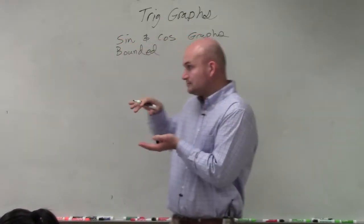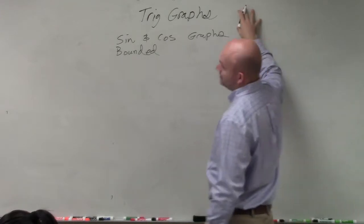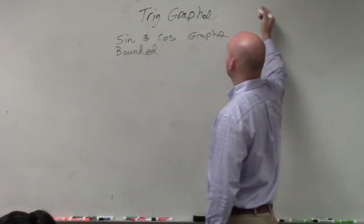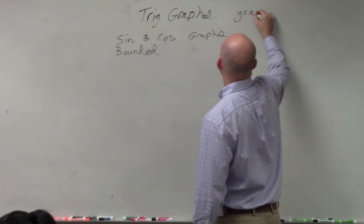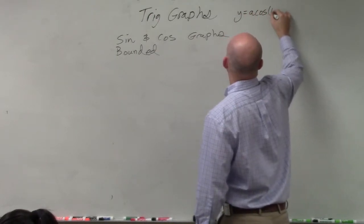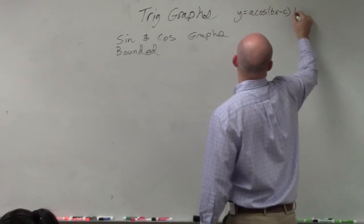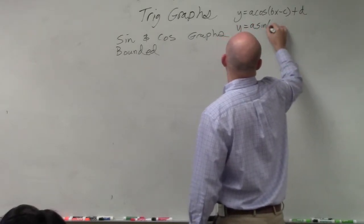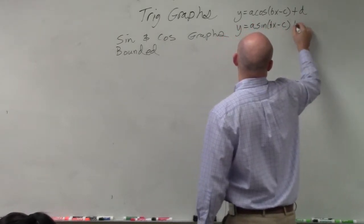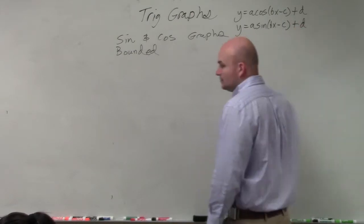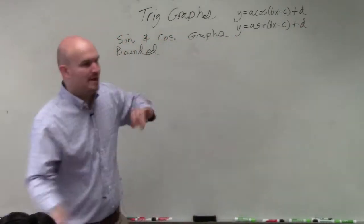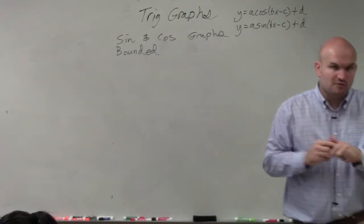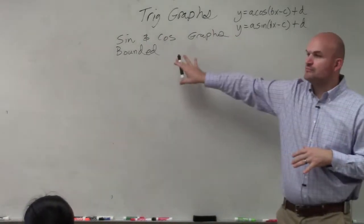So when we're looking into graphing them with our transformations, we're going to use y equals a times cosine of bx minus c plus d, or y equals a times sine of bx minus c plus d, which is our other. And again, I'll go over those again. But a couple things to remember, they're both bounded.